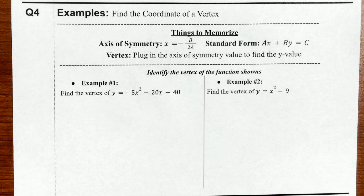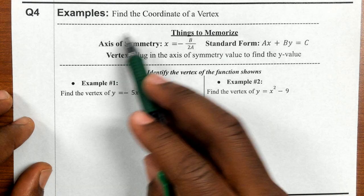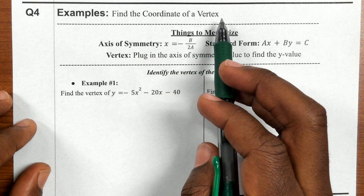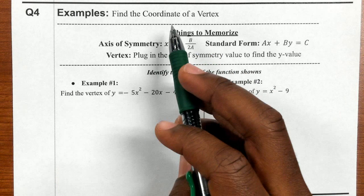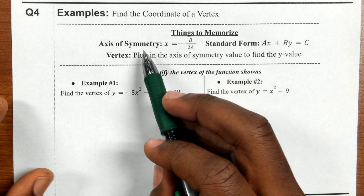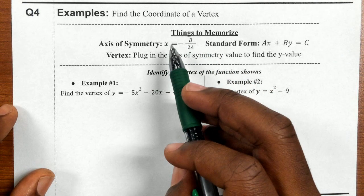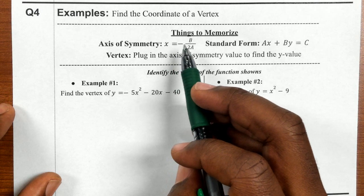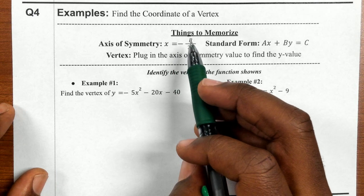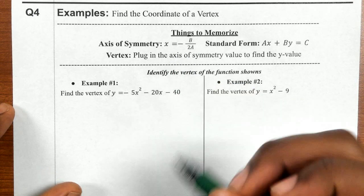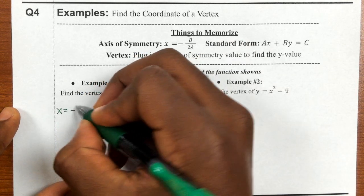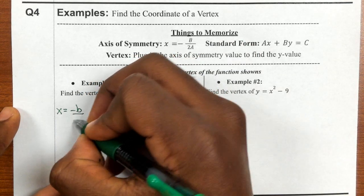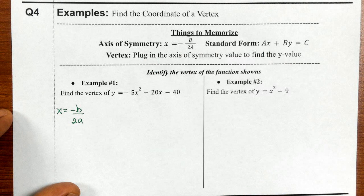Unit 7, question number 4 wants us to find the coordinate of a vertex. To find the vertex without vertex form, we can use the formula x equals negative b over 2a.